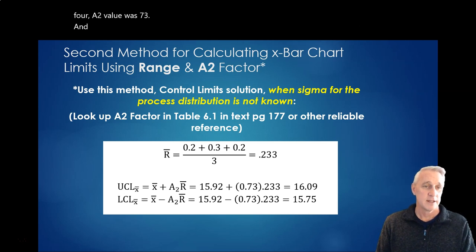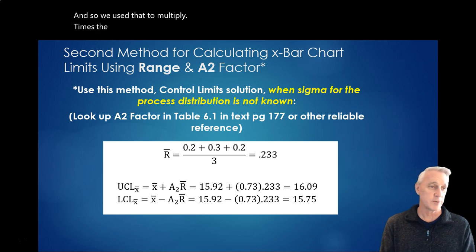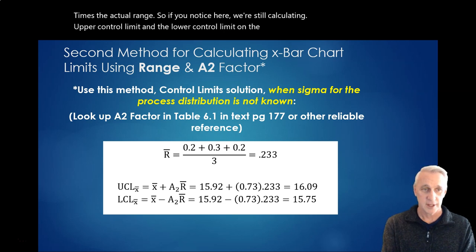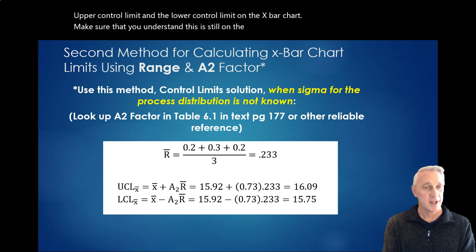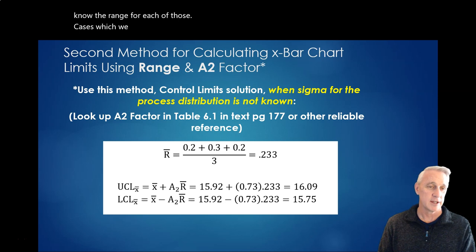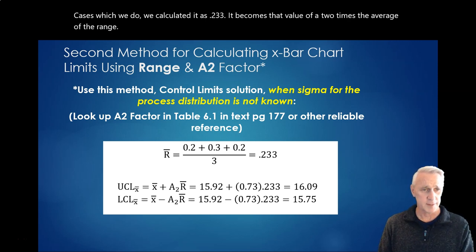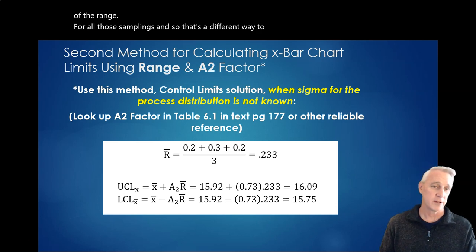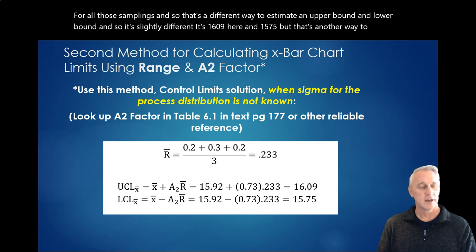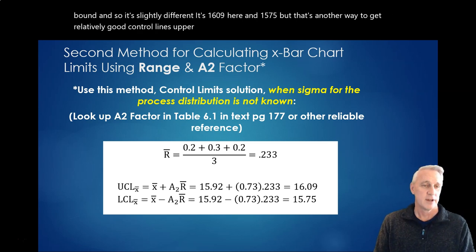So, it turns out for this particular case, when we had N equals to 4, the A2 value was 0.73. And so, we use that to multiply the actual range. So, if you notice here, we're still calculating the upper control limit and the lower control limit on the X bar chart. Make sure that you understand this is still on the X bar chart. It just so happens that if we know the range for each of those cases, which we do, we calculated it as 0.233, it becomes that value of A2 times the average of the range for all those samplings. And so, that's a different way to estimate an upper bound and lower bound. And so, it's slightly different. It's 16.09 here and 15.75. That's another way to get relatively good control lines, upper bound control limits, without knowing the entire population standard deviation.